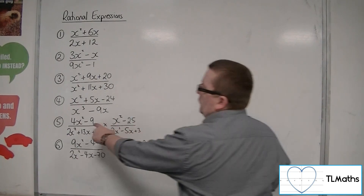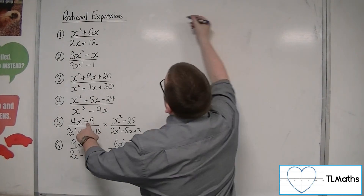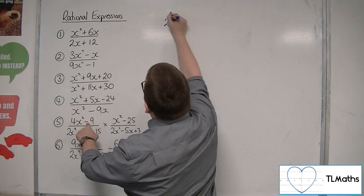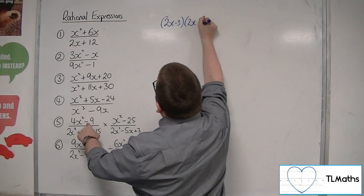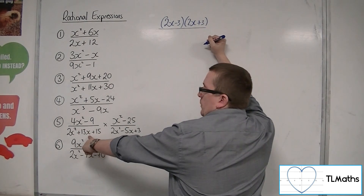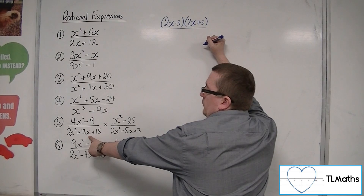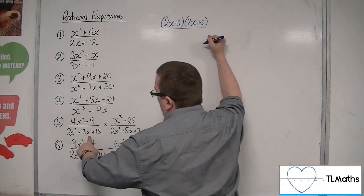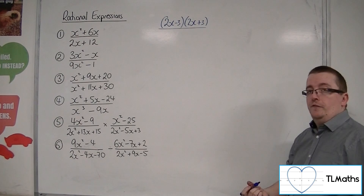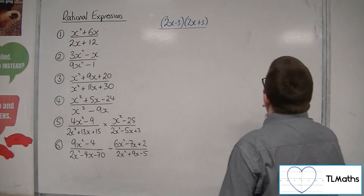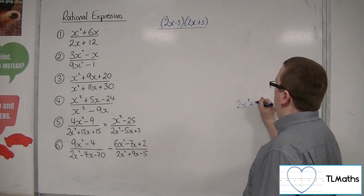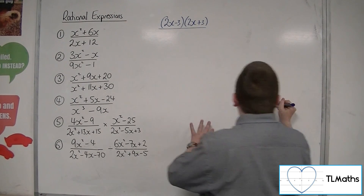So I've got 4x squared minus 9 — that's the difference of two squares — so that's 2x minus 3 times 2x plus 3. In the denominator we've got 2x squared plus 13x plus 15. Depending on how confident you feel with factorising, we'll work it out below: 2x squared plus 13x plus 15.